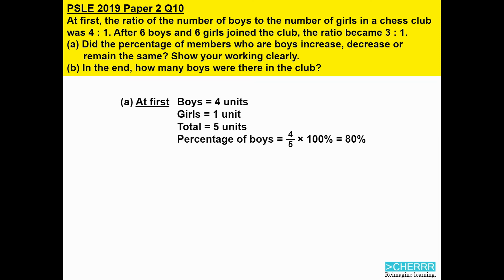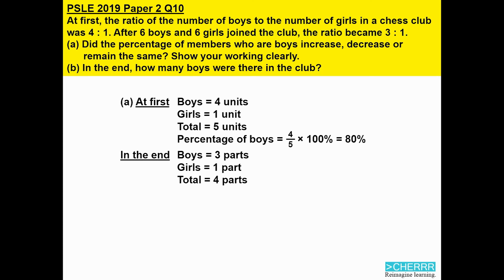In the end, we will not use the same unit of measurement since there is actually a change, so I will call it 'parts' this time. Boys: 3 parts, girls: 1 part, total: 4 parts. Again, calculating the percentage of boys using boys over total multiplied by 100 gives us three-quarters times 100, which equals 75%.